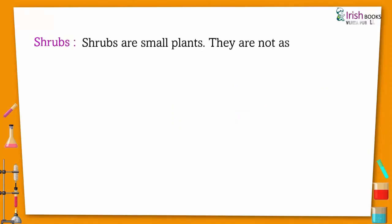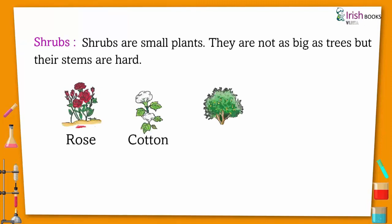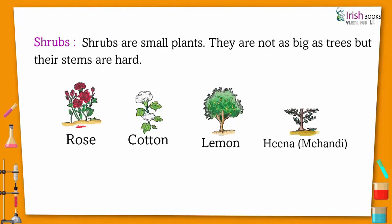Shrubs are small plants. They are not as big as trees but their stems are hard. Like rose, cotton, lemon, heena or mehdi.